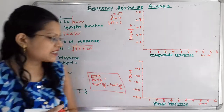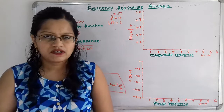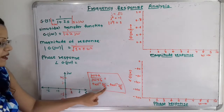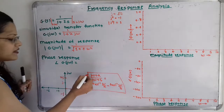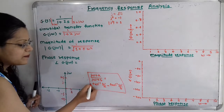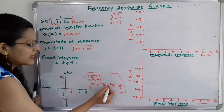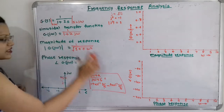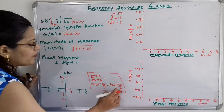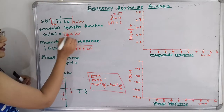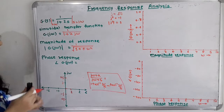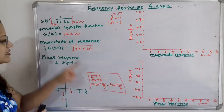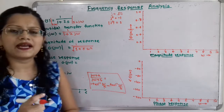Now for the phase response, the basic formula is: the phase of (j*omega + a)/(j*omega + b) equals tan⁻¹(omega/a) minus tan⁻¹(omega/b). When the j*omega term is in the numerator, we take plus tan⁻¹(omega/a), and when it is in the denominator, we take minus tan⁻¹(omega/b).